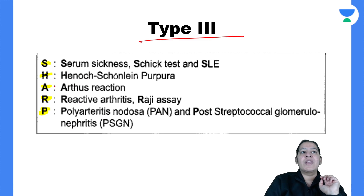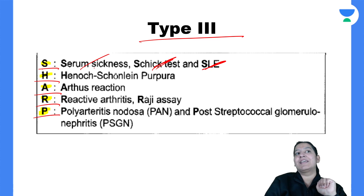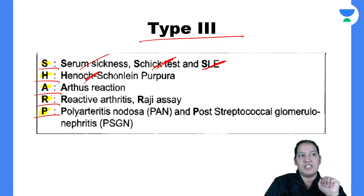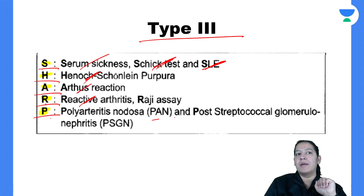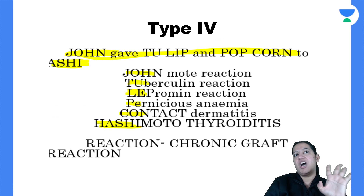Type 3 — the mnemonic is SHARP: S-H-A-R-P. S stands for three things: SLE, Schick's test, and serum sickness. H is Henoch-Schönlein Purpura. A is Arthus reaction. R is reactive arthritis. And P is PAN — Polyarteritis nodosa — and PSGN (post-streptococcal glomerulonephritis). So SHARP is the mnemonic for type 3.